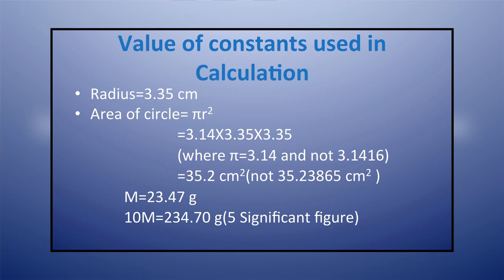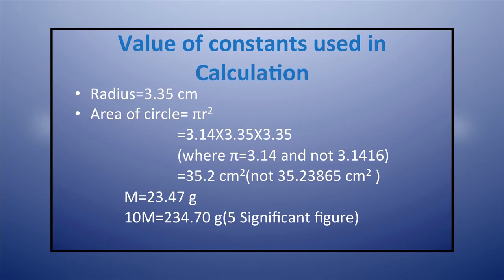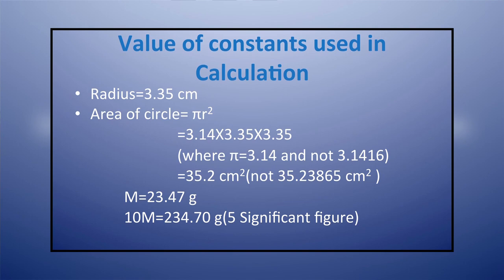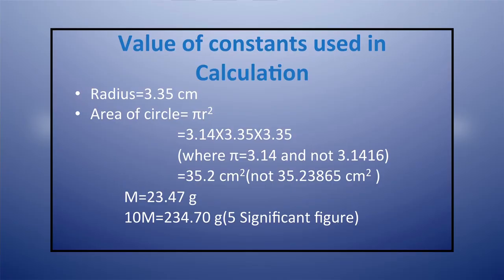For example, we are calculating the area of a circle: area = π r². Pi is a constant. Suppose r = 3.35 centimeter, which contains 3 significant figures. The area will be equal to 3.14 × 3.35 × 3.35 = 35.23865 centimeter square. But as we have to keep only 3 significant figures, the result will be 35.2 centimeter square.